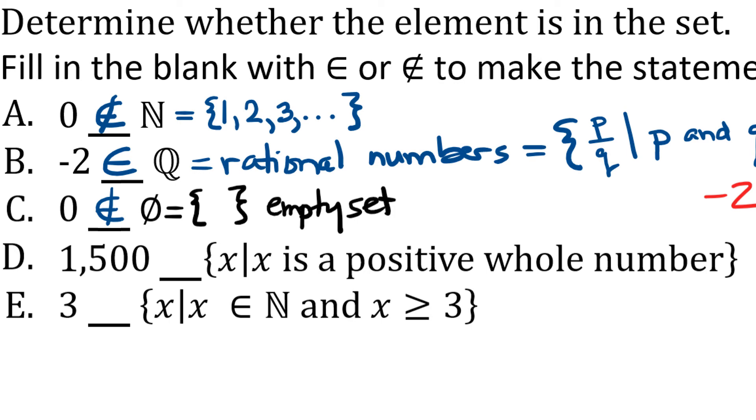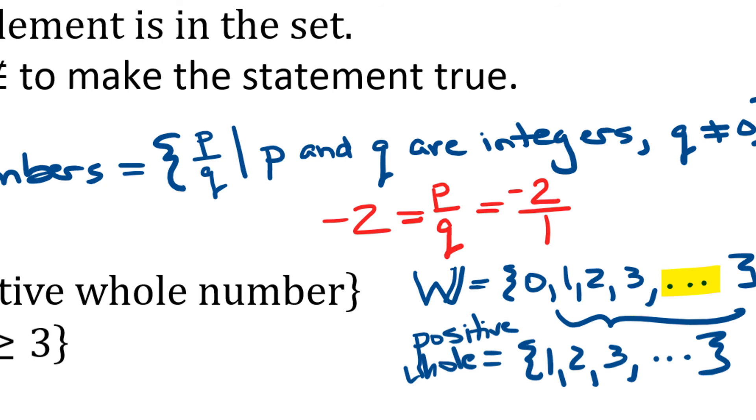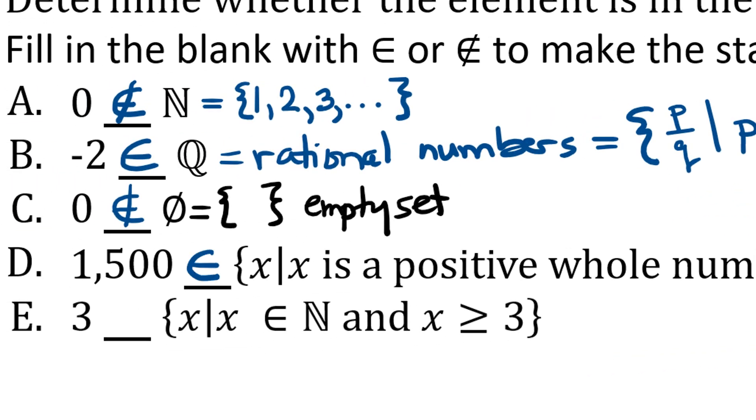Let's look at part D. Here we're asking if 1500 is in the set of all X such that X is a positive whole number. Whole numbers. So the whole numbers, which we can denote with a bold W, are the numbers that start with 0, 1, 2, 3, and so on. The positive whole numbers refers to everything after 0 because 0 is neither positive nor negative. It's right in the middle. So the positive whole numbers would be 1, 2, 3, and so on. You could also refer to these as the natural numbers. What we're being asked though is, is 1500 an element of that set? So what do you think? If you said yes, you're correct because remember these ellipses indicate the pattern continues and since there's nothing at the end of the ellipses, it means it continues forever. This is an infinite set and it definitely includes the number 1500. So we would put is an element of the set.